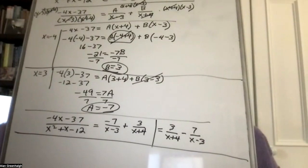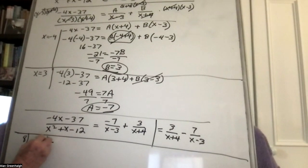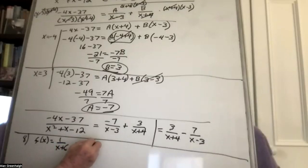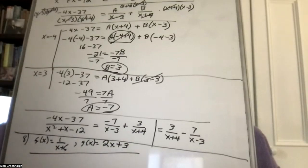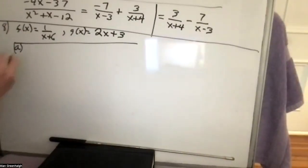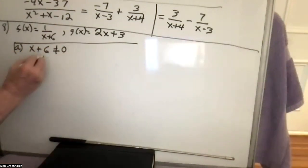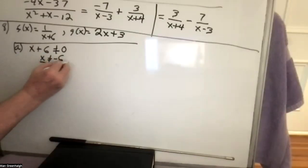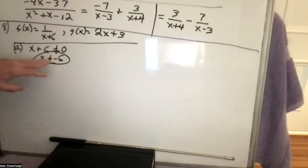This problem, not many people got wrong — it was a pretty straightforward problem, nine points total. You're given two functions. The first question is to find the domain of f(x). The problem with this function is what happens when the denominator is zero. We want x plus 6 to not equal zero, so x is not equal to negative 6.